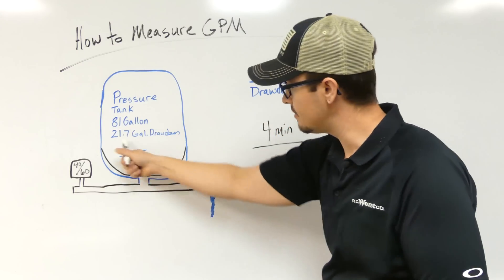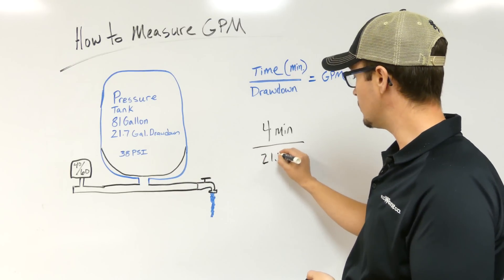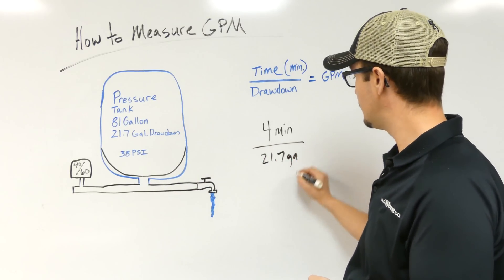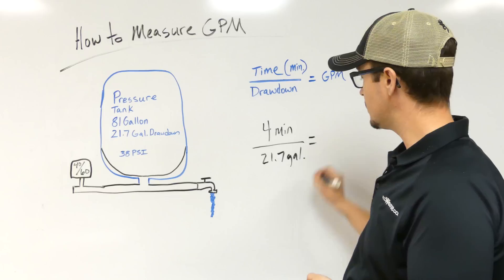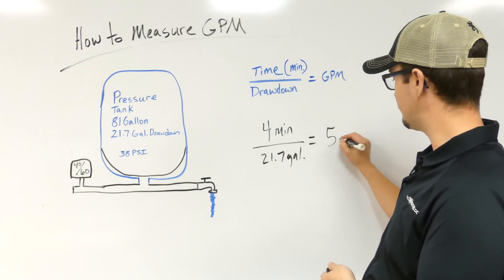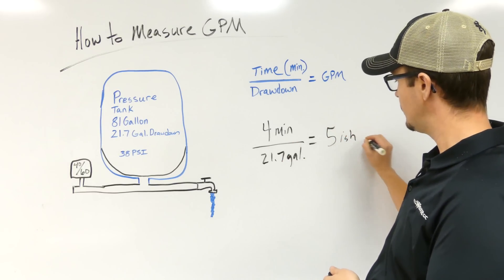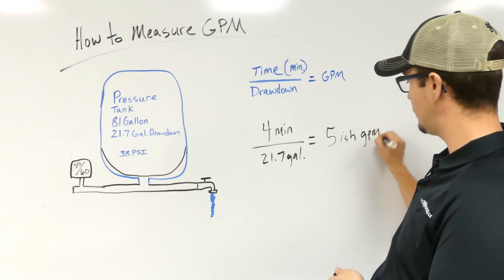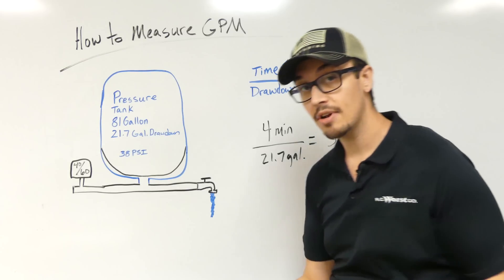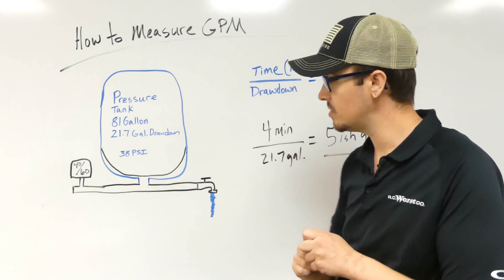Let's just do a quick one here. Let's say it took four minutes to do our drawdown of 21.7 gallons. So that gives us roughly five-ish gallons per minute. You can see just how quick and simple this method is.